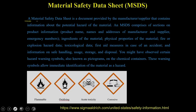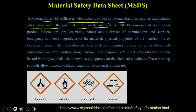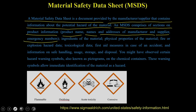A material safety data sheet is a document provided by the manufacturer or supplier that contains information about the potential hazards of that material. The MSDS is comprised of sections on product information: the product name, names and addresses of manufacturers and suppliers, and emergency numbers. In case of spillage or exposure to a particular person, it will tell you the emergency number so you can call and get solutions on how to handle the situation.